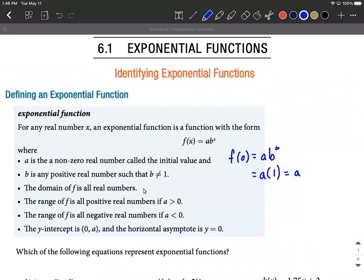Now the domain on these is going to be all real numbers. The range is going to be affected. If a is greater than zero, if it's facing upwards, it's going to be from zero to infinity. Positive numbers.